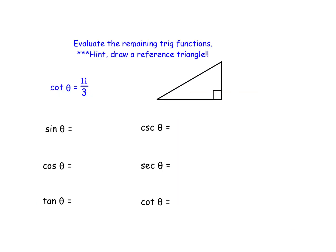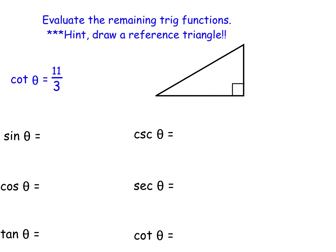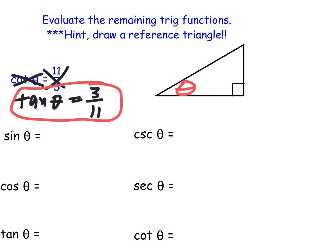Moving on: this is a complete repeat of the last one, but this time they gave me cotangent. If I ever give you one of those weird functions, immediately change it to the other function. Instead of cotangent 11 thirds, I'm going to use tangent 3 over 11. I'm peacefully refusing to do that problem the other way. With the key angle there, TOA is opposite over adjacent — easy. And then I could find the third side: square root of 121 plus 9, which is square root of 130.